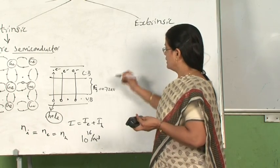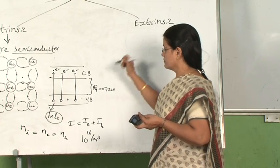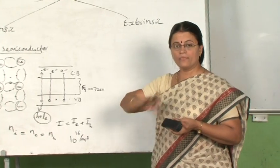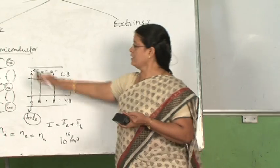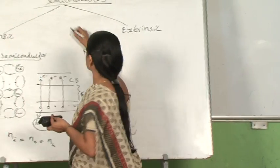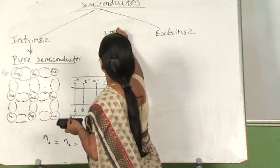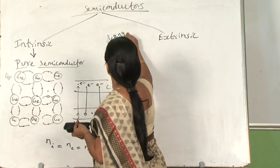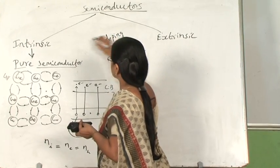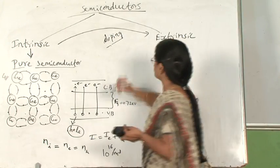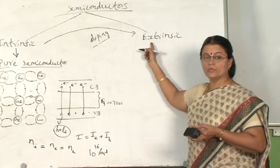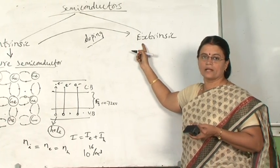The method of increasing the conductivity or modifying the property of a pure semiconductor is called doping. By doping, the intrinsic semiconductor can be converted into an extrinsic semiconductor.